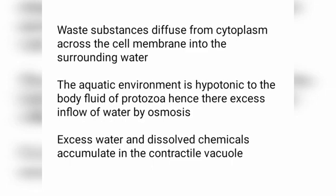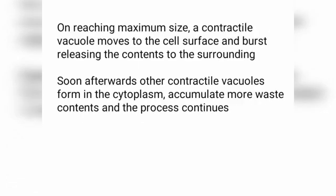Excess water and dissolved chemicals accumulate in the contractile vacuole. On reaching maximum size, the contractile vacuole moves to the cell surface and bursts, releasing the contents to the surrounding. Soon afterwards, other contractile vacuoles form in the cytoplasm, accumulate more waste contents, and the process continues.